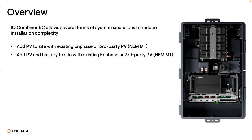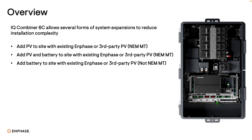This is particularly important for homeowners in California who wish to retain net energy metering for their existing system. Configuring the system as NEM multi-tariff allows them to comply with the rules of utility companies and continue to earn credit at the retail rate for energy exported by the existing system. You can also add batteries to any site with existing Enphase or third-party PV for non-NEM multi-tariff systems, such as NEM 3.0 or outside California.